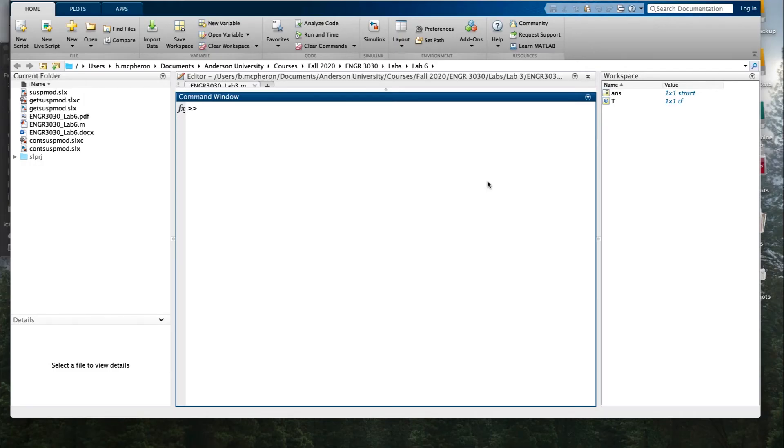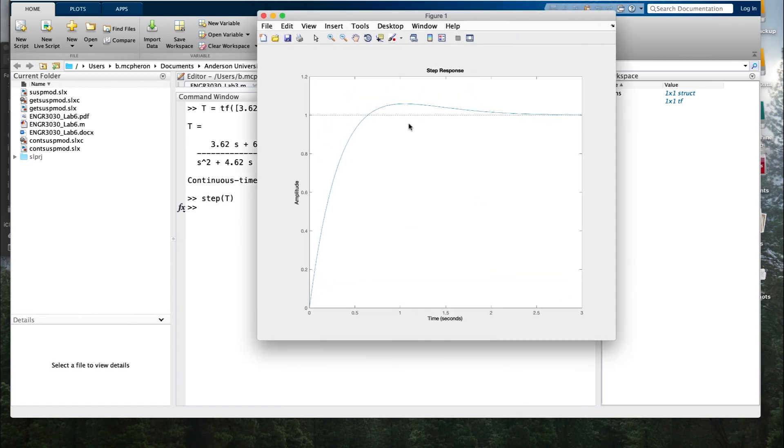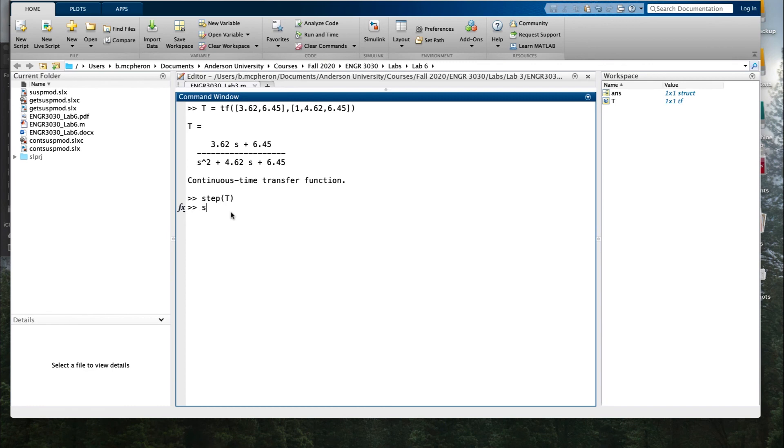So why don't we test this out in MATLAB and see how the response compares to what we are desiring. T is equal to the transfer function of 3.62 comma 6.45, and then the denominator is 1, 4.62, 6.45. Then what I want to do, we can compare that, that looks right, I want to step T. So it looks like maybe this isn't quite what I was hoping for. It looks like the overshoot might be too big. I don't know about settling time, so what I need to do is verify by using something which gives me more detail. So let's use step info of T.